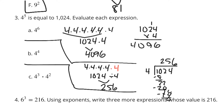What about 4 to the 3rd times 4 squared? Well, 4 to the 3rd is 4 times 4 times 4, and 4 squared is 4 times 4. That is 4 to the 5th — there are 5 fours there. So this is equal to 4 to the 5th, which is simply 1024.